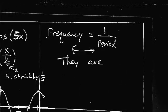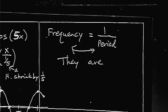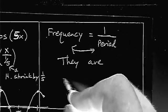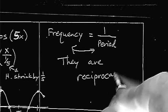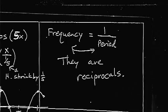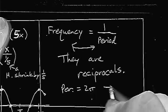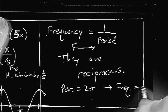One thing the book talks about is frequency. Frequency has a relationship to the period — frequency is 1 over the period, so they are reciprocals of each other. Period and frequency are reciprocals. If the period is 2 pi, then the frequency is 1 over 2 pi.